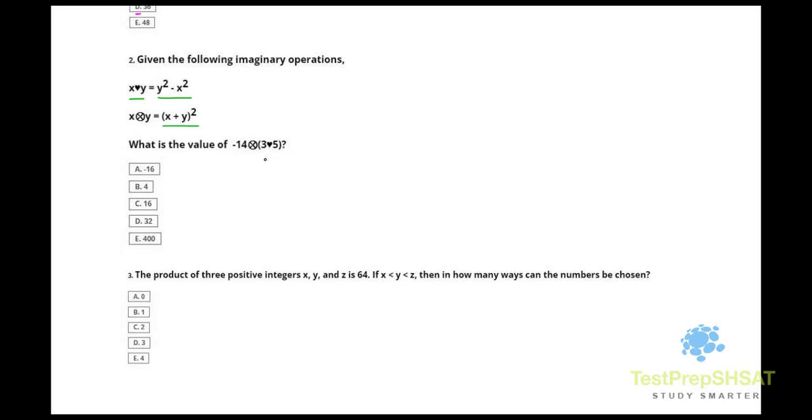Okay, so first thing we want to note is we have to follow PEMDAS, so we want to do the parentheses first, the 3 heart 5, which essentially says square the second value after the heart, that's 5 in this case squared, and subtract from that the first value squared, which is 3 squared. It's 25 minus 9, or 16.